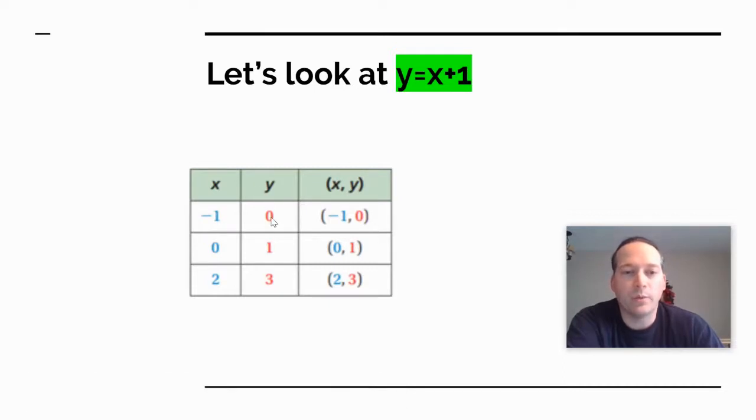So in order to do it, basically what we're going to do is we'll just choose a number for X, solve for Y. So we like to choose negatives, zero is always a great number to choose because it's zero, it's not very complicated, and then a positive number. So this one was just negative one, zero, two. Does not always have to be these, you'll see this as we go up. So if I plug negative one into this equation, negative one plus one is zero. So when X is one, Y is zero. So this would be a solution to the equation, negative one, zero.